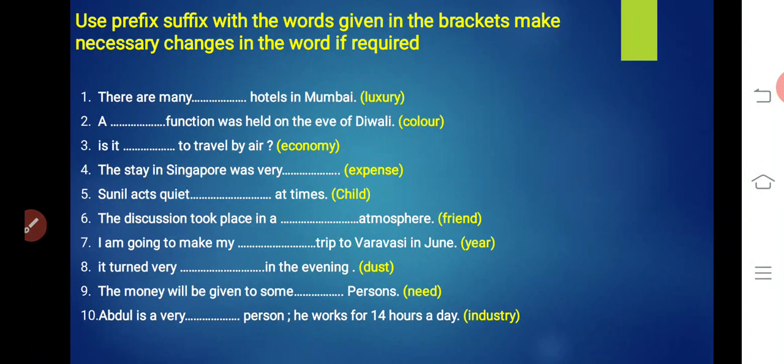Sentence number four. The stay in Singapore was very dash. The stay in Singapore was very... Expense means cost. What will it become? Costly. What word? Expensive. The stay in Singapore was very expensive. Number five. Sunil acts quite dash at times. How does Sunil behave sometimes? Like a child. What will child become? Childish. Number six. The discussion took place in a dash atmosphere. The discussion happened in what kind of atmosphere? Friend. What will friend become? What kind of atmosphere? Friendly. We just have to attach LY at the end of friend. Number seven. I am going to make my dash trip to Varanasi in June. I am going in June. What kind of trip? What will year become? Yearly trip. Yearly trip means annual trip.